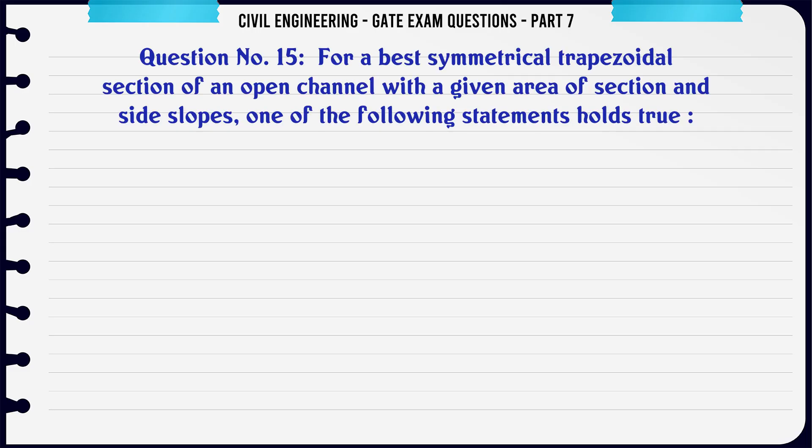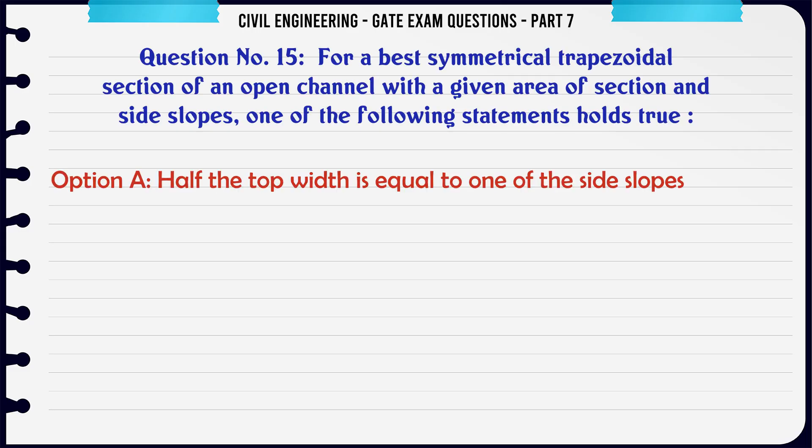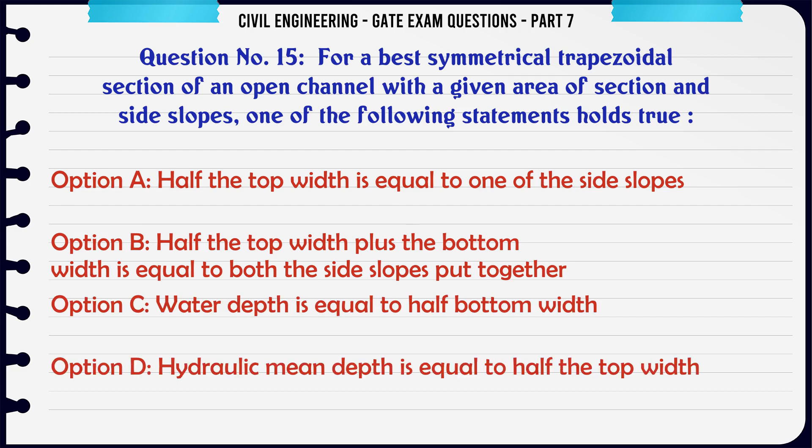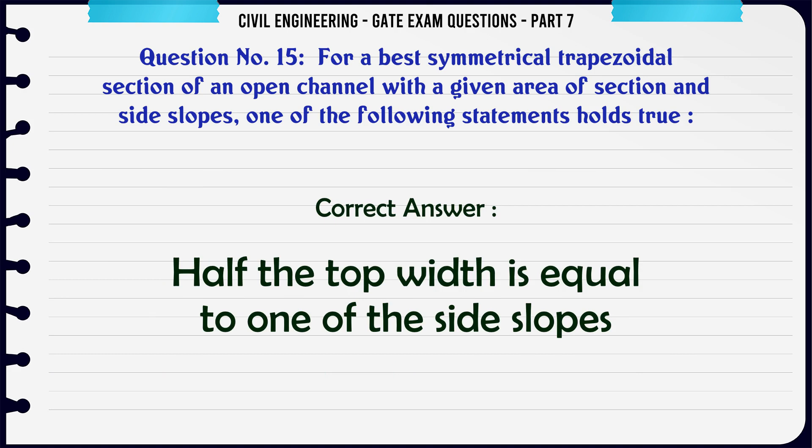For the best symmetrical trapezoidal section of an open channel with a given area of section and side slopes, one of the following statements holds true: A) half the top width is equal to one of the side slopes; B) half the top width plus the bottom width is equal to both the side slopes put together; C) water depth is equal to half the bottom width; D) hydraulic mean depth is equal to half the top width. The correct answer is: half the top width is equal to one of the side slopes.